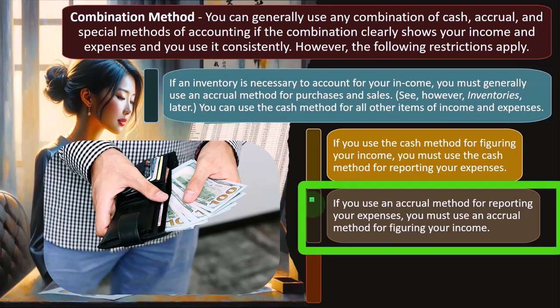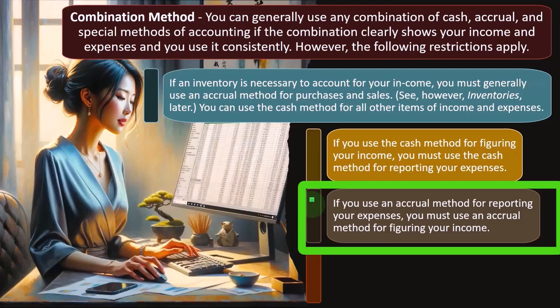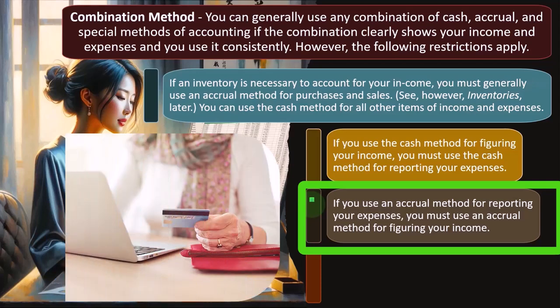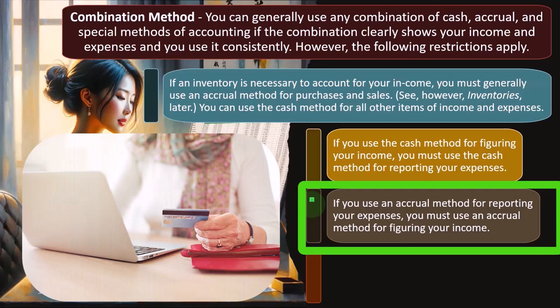If you use accounting software like QuickBooks, expenses like the utility bill and so forth might just be coming through the bank feeds, either with credit cards or cash payments, and you're basically expensing them as they become due, which you can think of as basically a cash-based system.